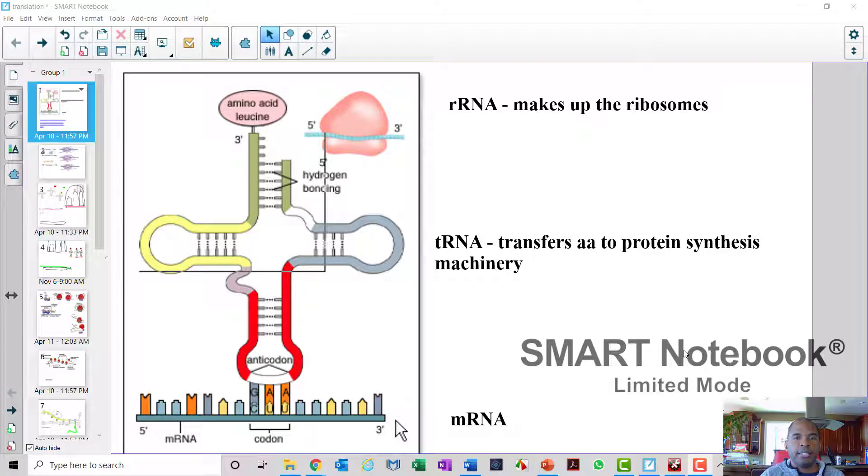So that brings us to the third chunk, and this chunk is translation. This is the second part of the central dogma in molecular biology. For us to understand what's going on here, we need to review rRNA.